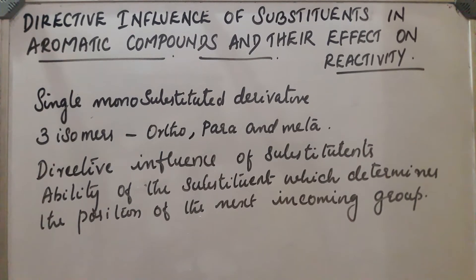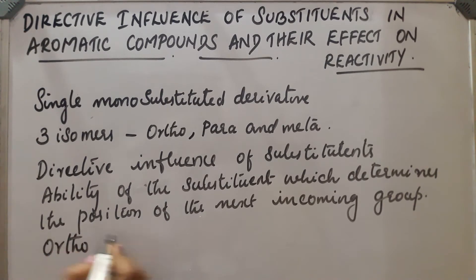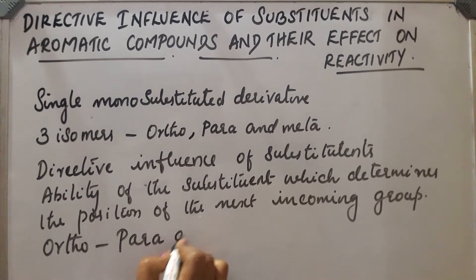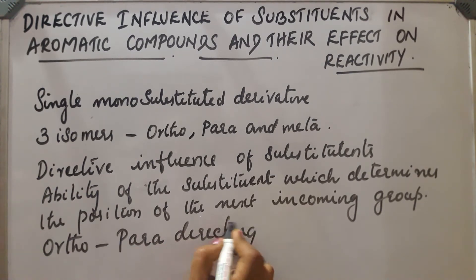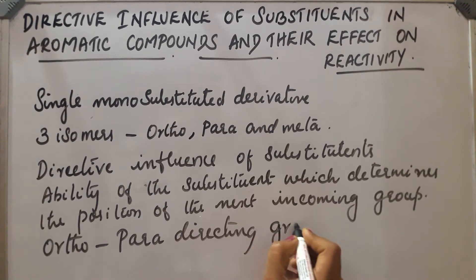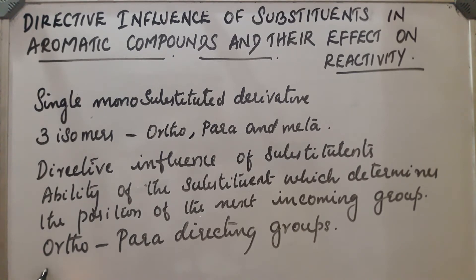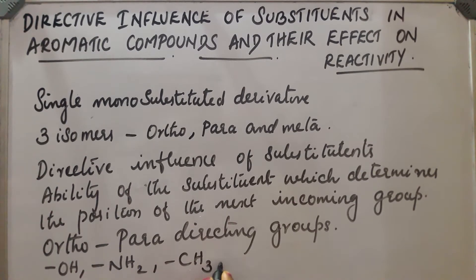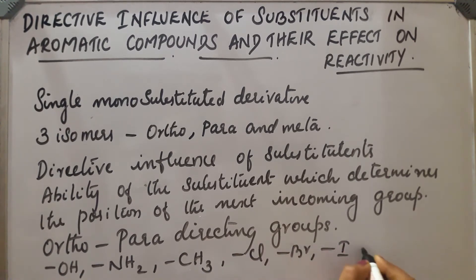Certain substituents are ortho-para directive — they direct the next substituent to the ortho and para positions. Such groups are called ortho-para directing groups. Some examples are OH, NH2, CH3, and halogens like Cl, Br, I, etc.